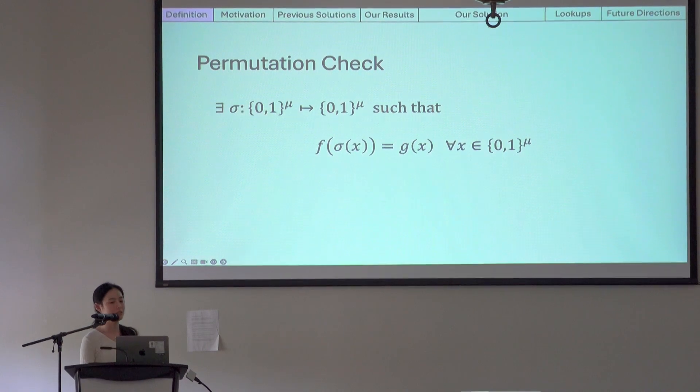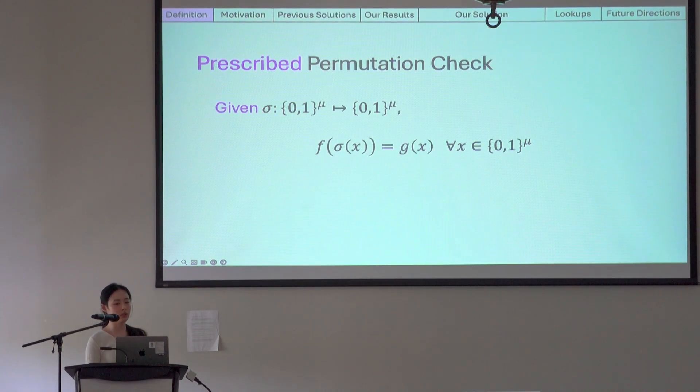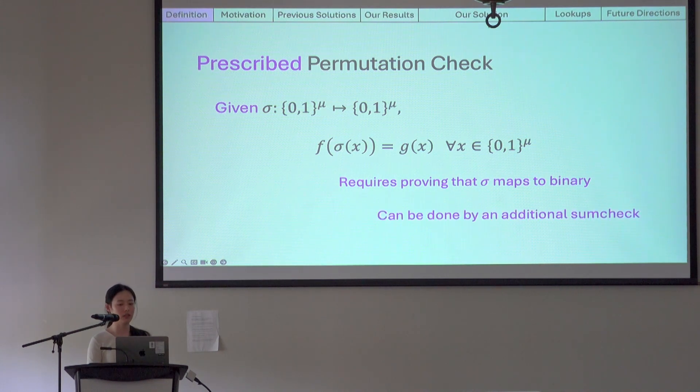So that is the basic permutation check formulation. There is also a closely related formulation called the prescribed permutation check for which we need to prove that the equality holds for a specific permutation polynomial sigma. This requires proving that the provided permutation polynomial actually maps to zeros and ones. And this can be done by using an additional sum check on top of the proving scheme for the basic permutation check.